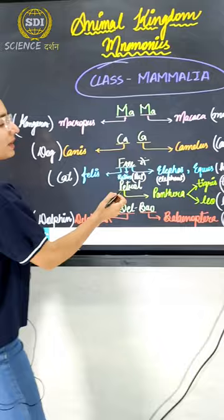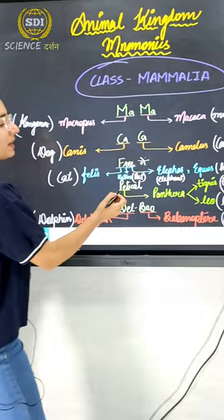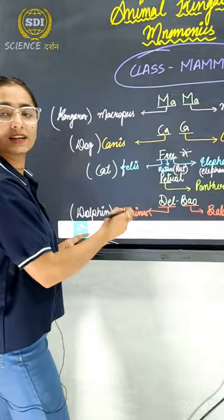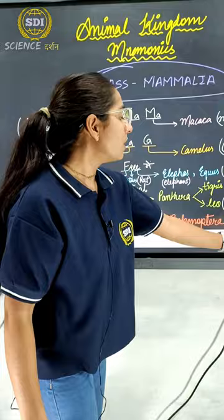That is horse. Petrols, we remember P from Panthera, that is Tigris and Leo, tiger or lion. Dalbaos, we remember Delphinus, that is dolphin, and B from Belenoptera, that is blue whale.